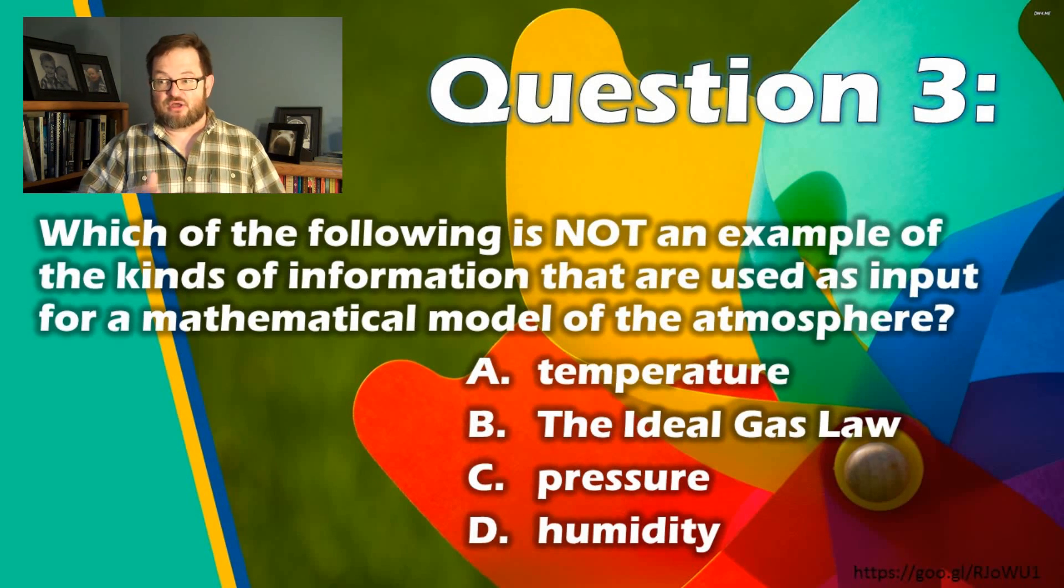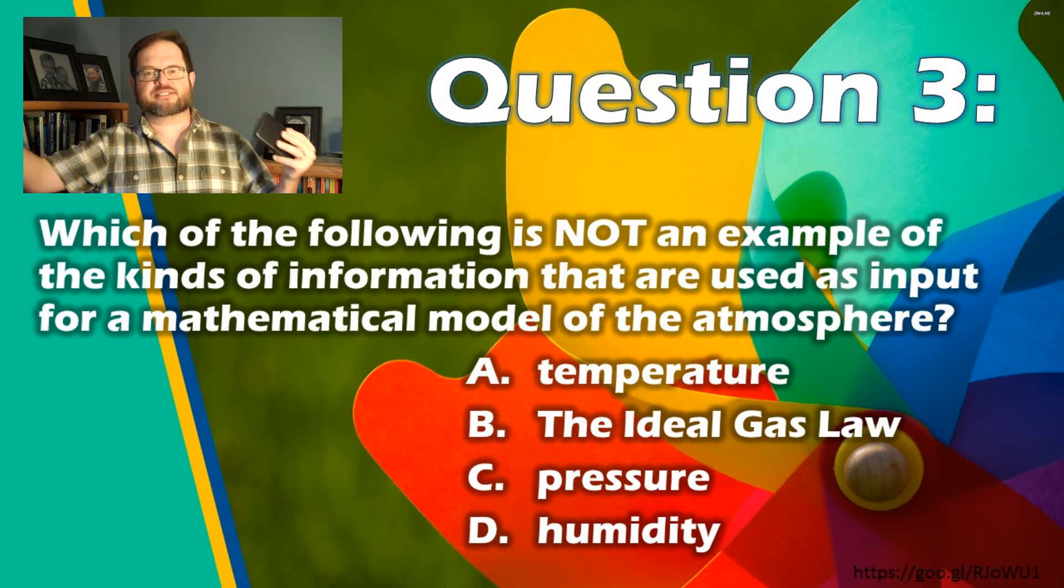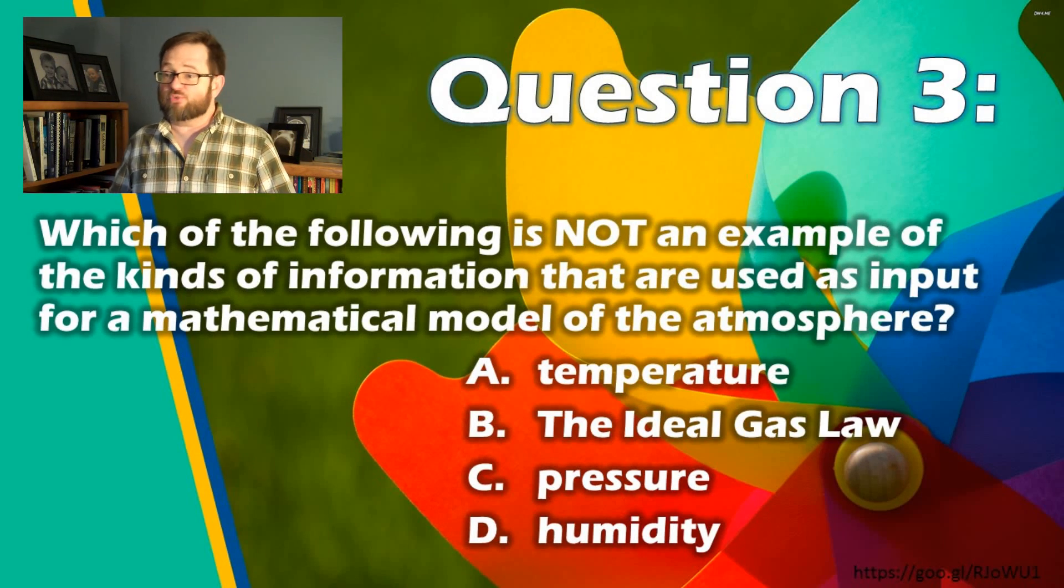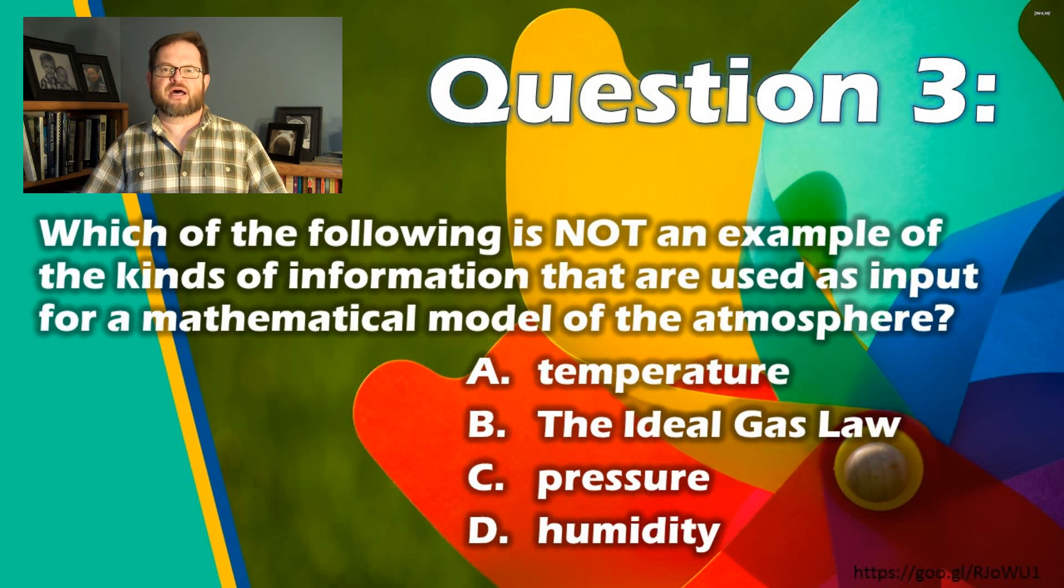In contrast, the ideal gas law, P equals rho RT, or PV equals NRT, depending on where you learned it, that's one of the physical laws that describes the atmosphere. That's part of the model.